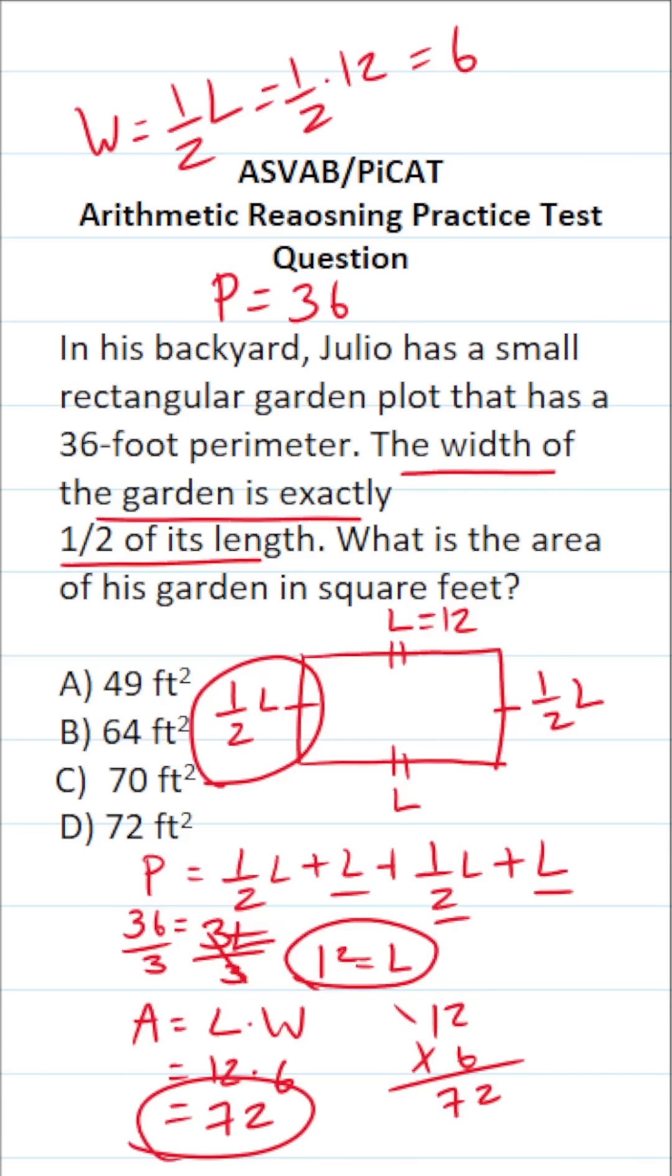So in other words, the area of his rectangular garden is going to be D, 72 square feet.